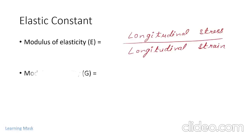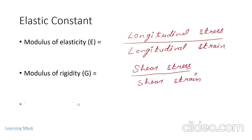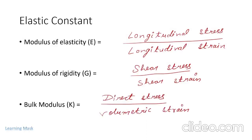Next is the modulus of rigidity, defined as the ratio of shear stress to shear strain. The next constant is bulk modulus, defined as the ratio of direct stress to volumetric strain. So these are our elastic constants.